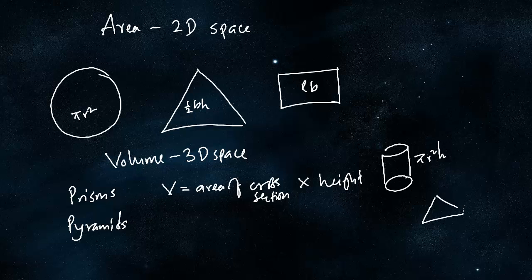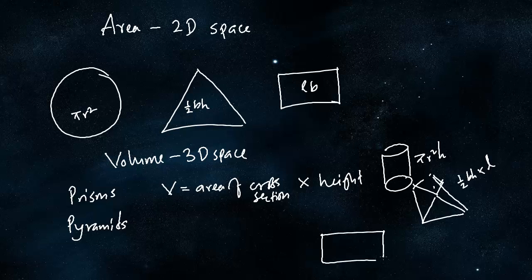In the case of a triangular prism, the volume would be half into base into height into the length. In the case of a cuboid or box, that would be length into breadth into height.